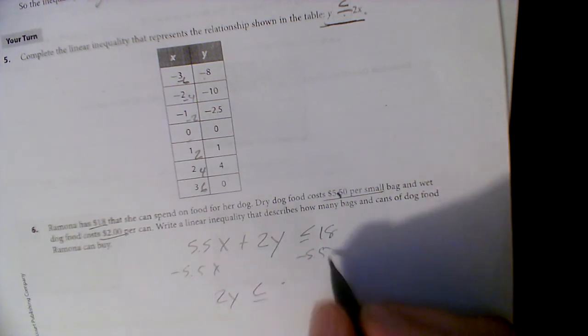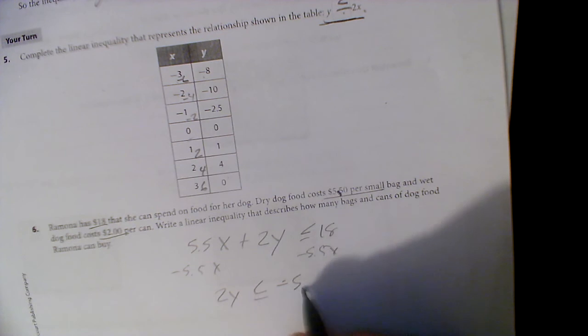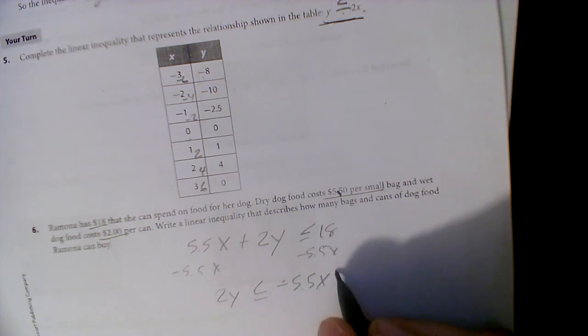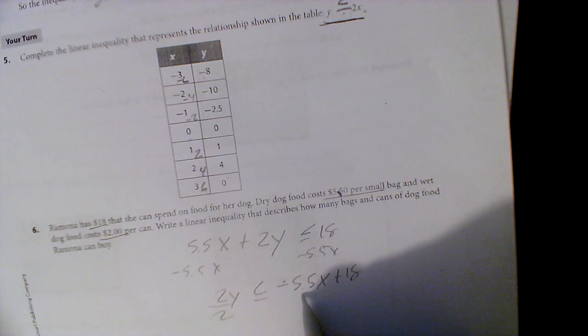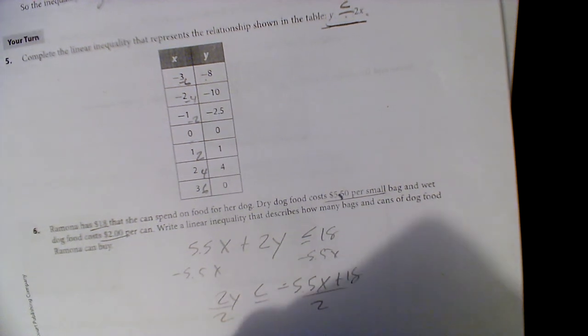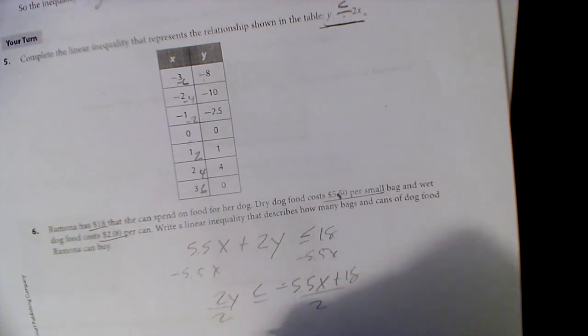That should be 5.5x, I'm sorry. So negative 5.5x plus 18, and we divide by 2 and divide by 2. We get 2y, or just y sorry, is less than or equal to...